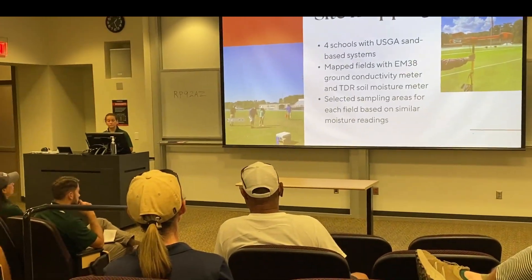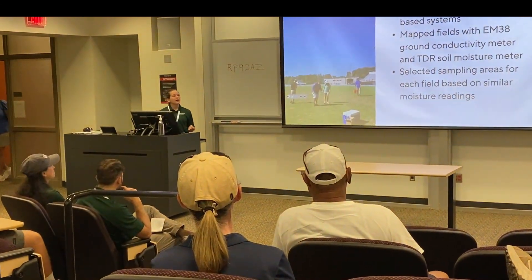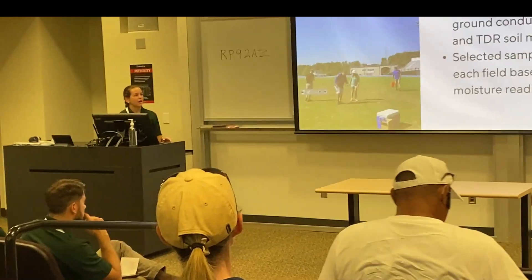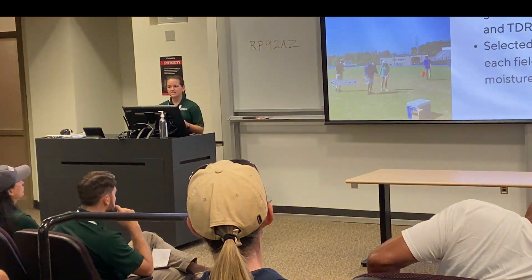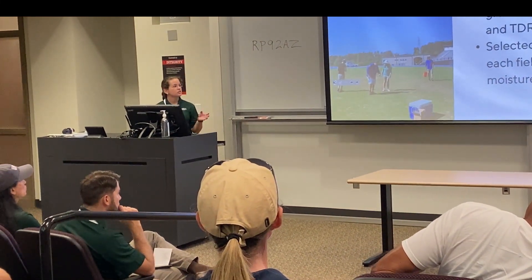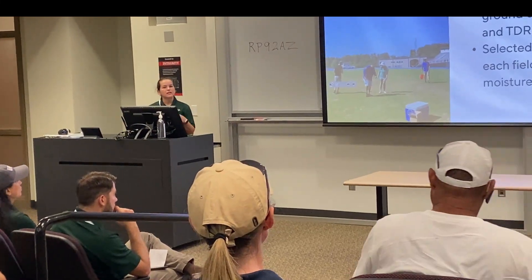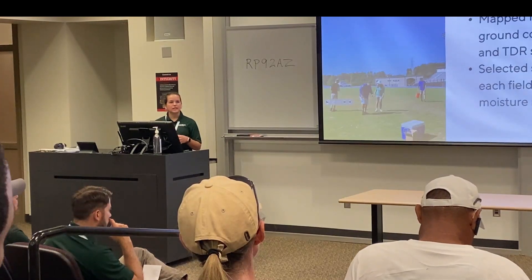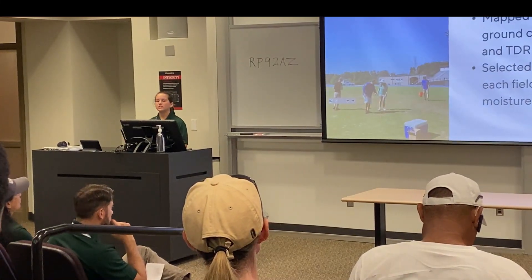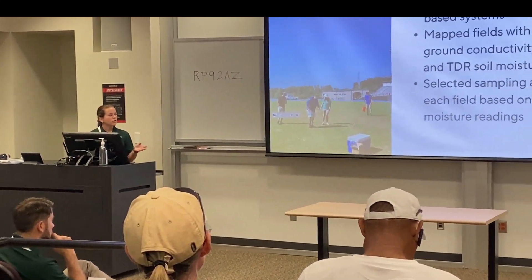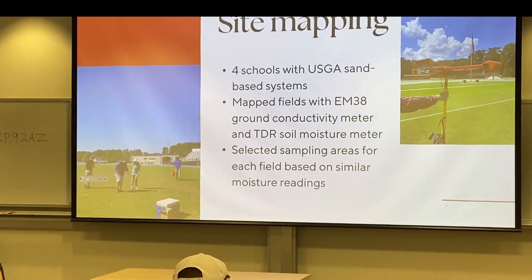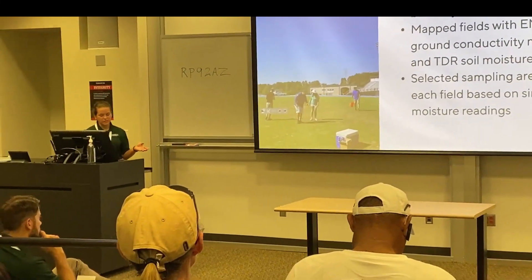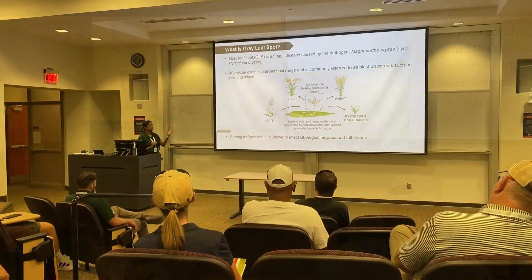We also used a TDR soil moisture meter, then made maps of all this data. While the EM38 is a great mapping tool, we don't really know exactly what it's telling us, so we took the soil moisture maps and collected samples based on similar moisture readings. We wanted to get all those underlying conditions under control — understanding which areas were wet versus dry — to ensure a more uniform, stable sample set.